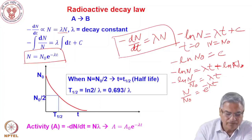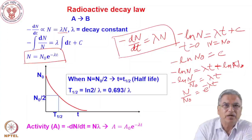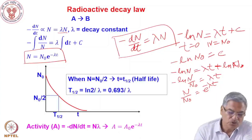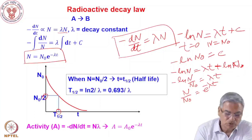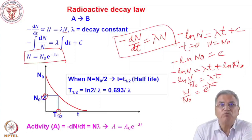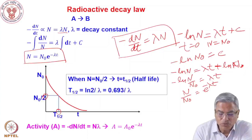From the decay graph we can identify the term called half-life. Half-life is the time when the number of atoms has become half. So initially there were N₀ atoms; the time when N₀/2 atoms remain is called the half-life. From the exponential data it can be difficult to find the half-life graphically, but we will discuss how to make it more accurate.